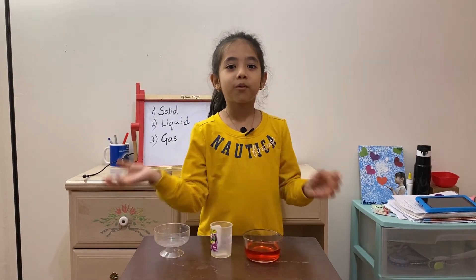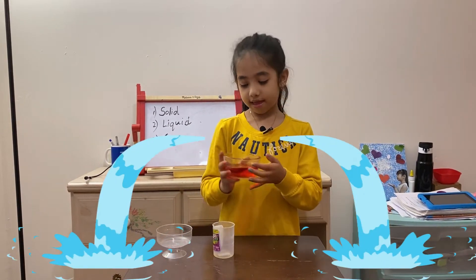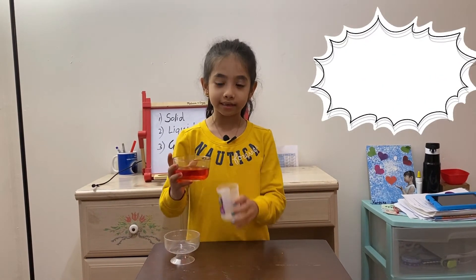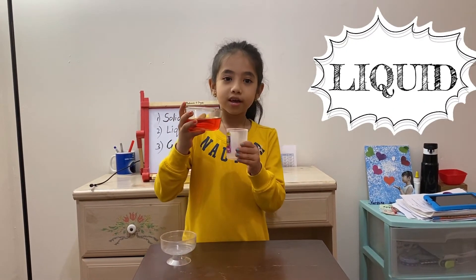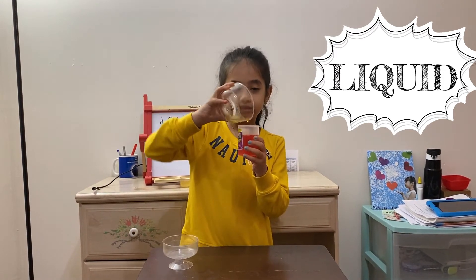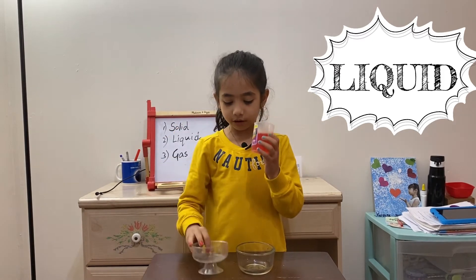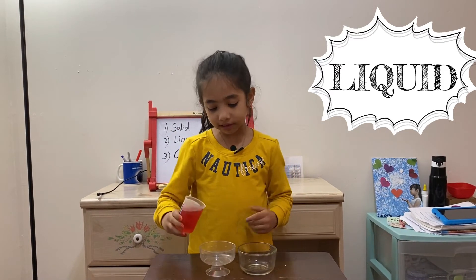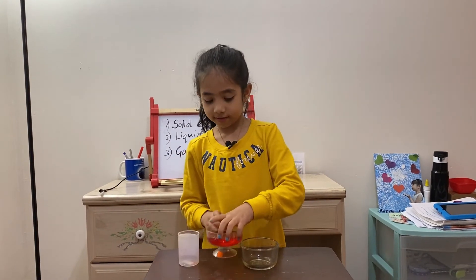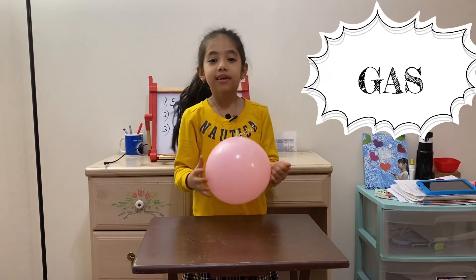Next we will be talking about liquids. Liquids take the shape of whatever container we pour them into. I have liquid and I pour it into different containers. Liquid has mass, so if I pour it from a sphere bowl into a cylinder shape, it takes the shape of a cylinder, and if we pour it into another container, it takes that shape too.